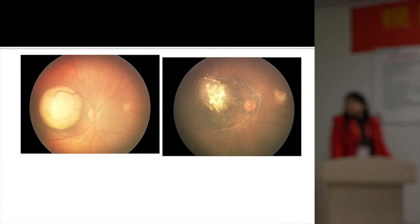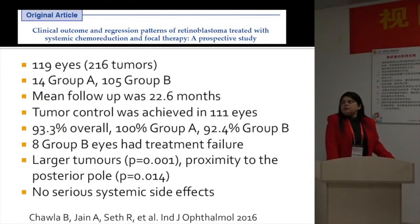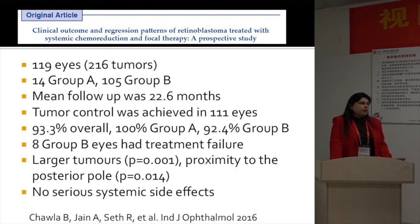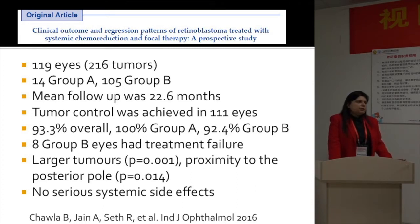This is another tumor where the macula was involved, and after treatment, the tumor showed nice regression with combination therapy. At our center we have published globe salvage rates and found excellent rates for Group A and Group B eyes, satisfactory rates for Group C, and for Group D it wasn't as good, but similar to reports from other centers worldwide. Group D tumors have almost a 50% likelihood of globe salvage with combined therapy. We also published a report studying clinical outcomes and regression patterns for Group A and Group B eyes treated with chemoreduction and focal therapy, with 93% overall tumor control — 100% for Group A and 92.4% for Group B.